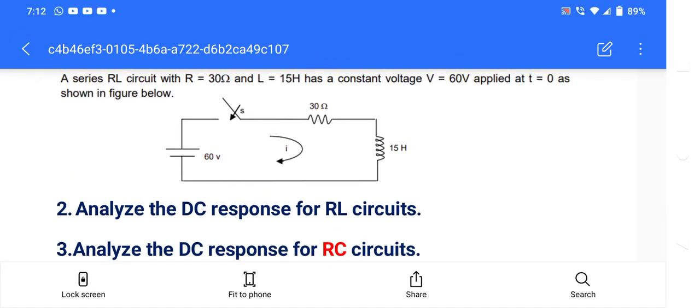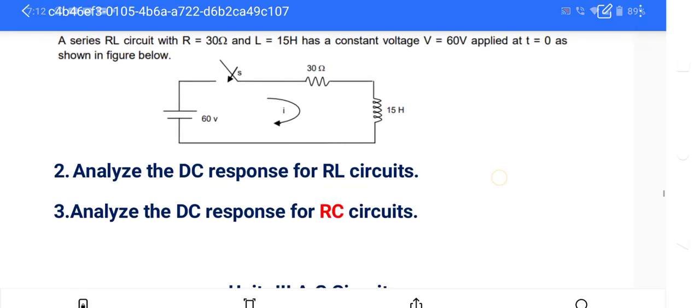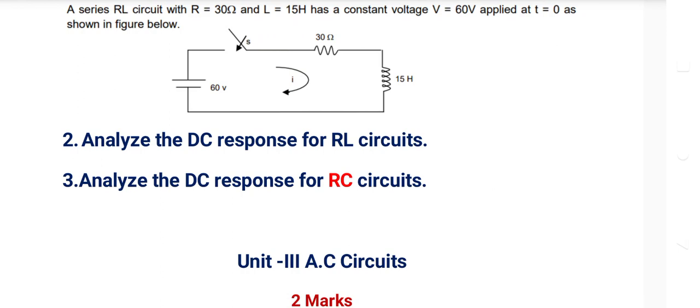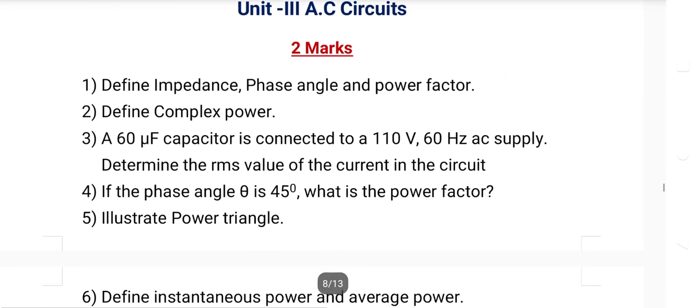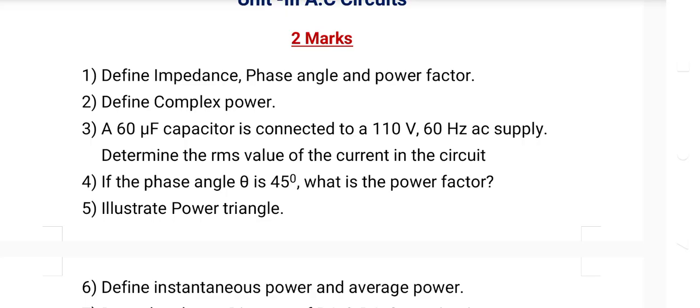Prepare Unit 1, 3, 4, 5 first, then Unit 2 last. Important: write statements exactly, draw diagrams neatly for each theorem. Network analysis means you must analyze the circuit confidently. Coming to Unit 3: define impedance, define complex power — for complex power you need to draw the power triangle. Important questions for Units 3, 4, and 5 can be found via the link in the description. Thank you.